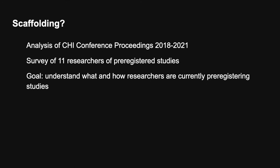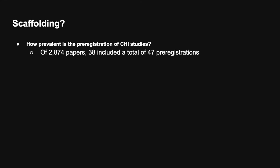The first analysis is a literature analysis of all CHI conference proceedings in the past four years, from 2018 to 2021. The second is a survey of 11 researchers who have experienced pre-registration. The goal of the formative study is to understand what and how researchers are currently pre-registering studies. Our first finding: not many people actually pre-register their studies. Of more than 2,800 papers, only 38 included a total of 47 pre-registrations — a paper can include multiple studies.